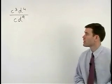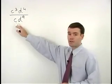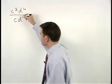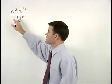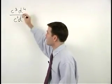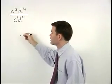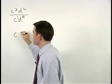As your first step here, I would change the C in the denominator to a C to the first. So when you divide C to the third by C to the first, we subtract 3 minus 1 to get C squared.